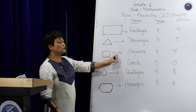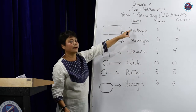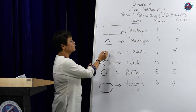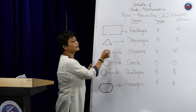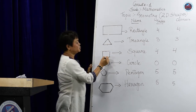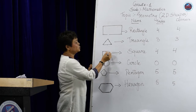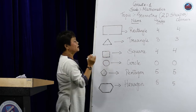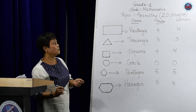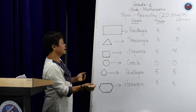Now we are going to see the square. The square is the same as a rectangle. The square has got also four sides and four corners: one, two, three, four, and one, two, three, four. So, the square is like a rectangle — it has got four sides and four corners.